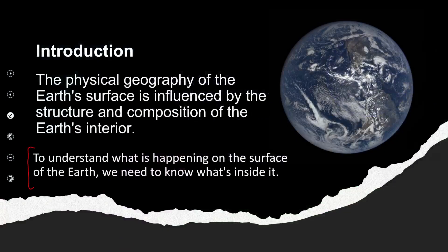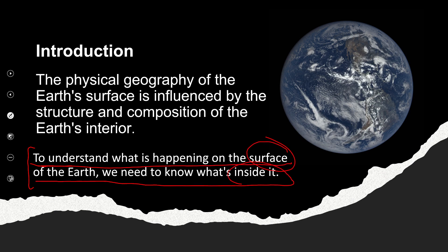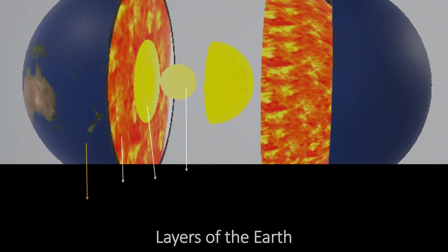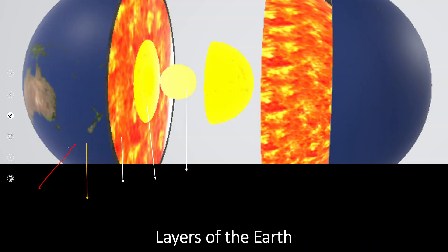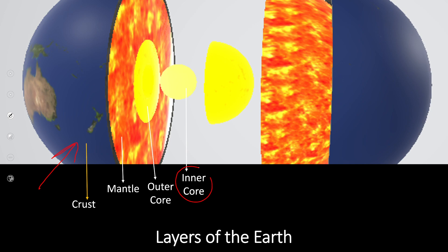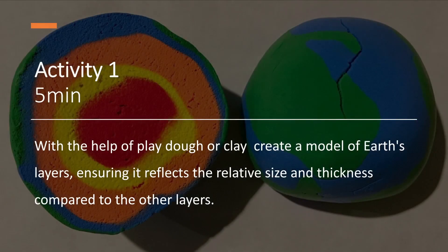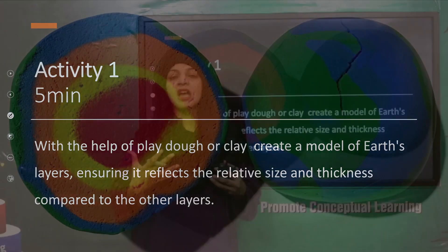Today we will study: to understand what is happening on the surface of the earth, we need to know what is inside. The layer visible on top of the earth is called the crust. The earth has different layers - the next layer to the crust is called the mantle, then comes the outer core, and then the very inside of the earth is called the inner core.